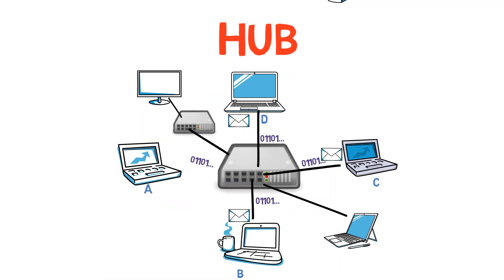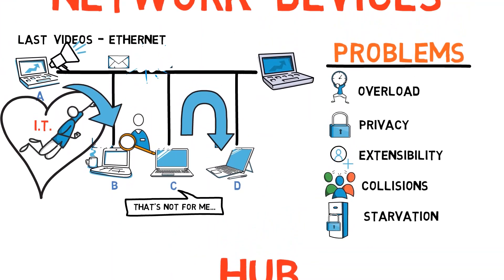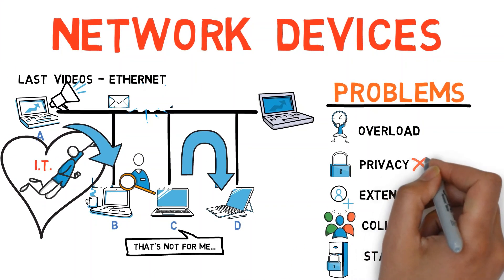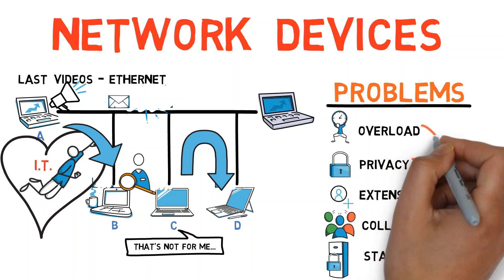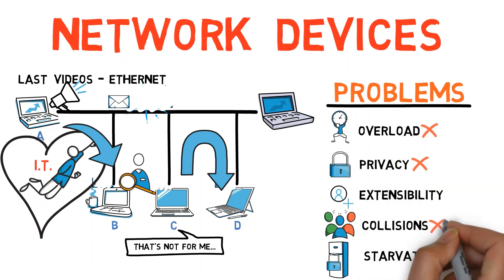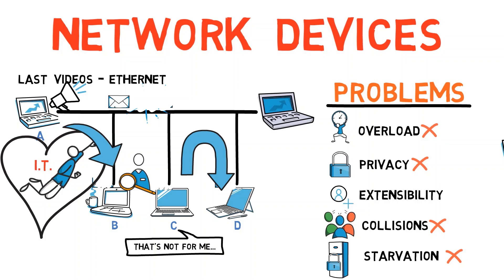This is a lot easier to maintain than what we've seen before. Yet, at least with classic hubs, all other issues still remain. Since all computers receive the frames sent from A to B, there is no privacy. The network is overloaded, collisions may occur, and the network is prone to starvation. What we really want is a device that, when A sends a frame to B, forwards that frame to B and only B.